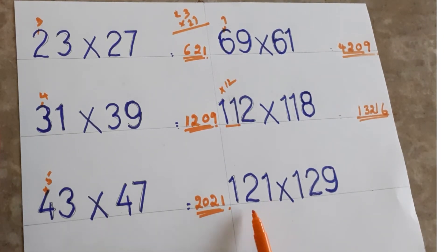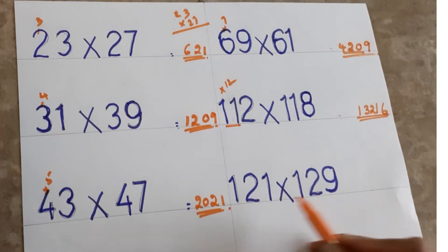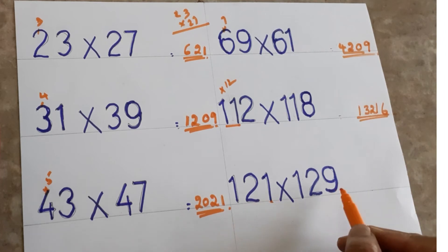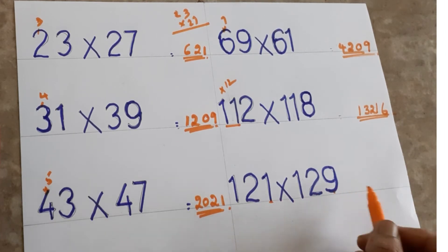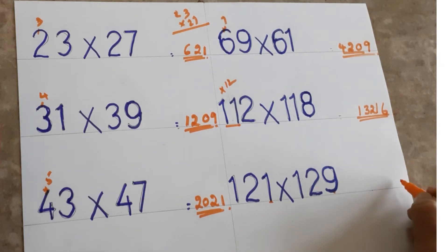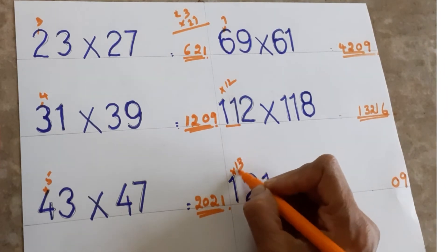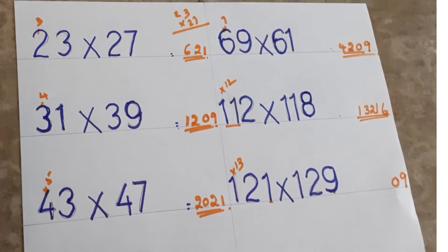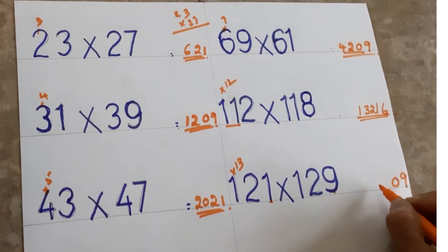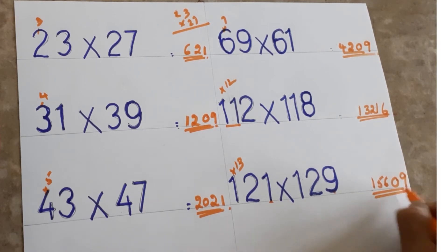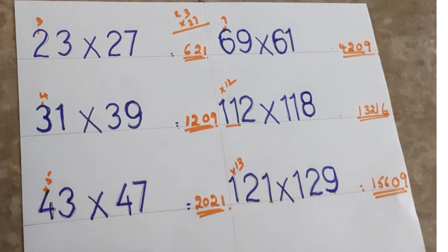Next: 121×129. Units place — one and nine. Nine ones are nine, single digit so write 09. Then 12 — after 12 the next number is 13. Twelve thirteens are 156. So the answer is 15609.